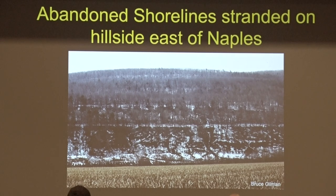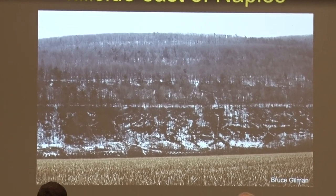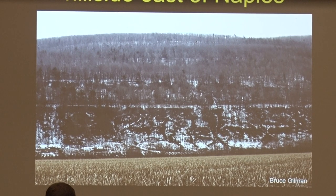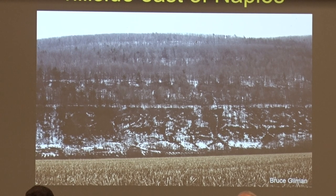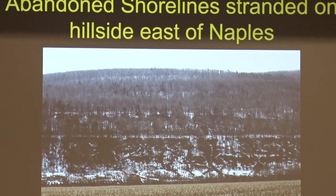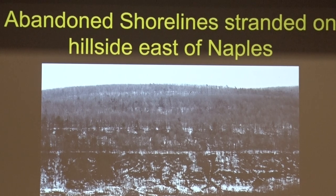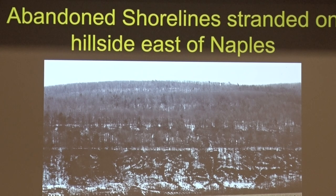I just happened to be down at the DEC maintenance building on Route 245, just as you come into Naples, right by Naples Creek where the Finger Lakes Trail runs. I looked back to the east on the hillside — it was late springtime, there was a little bit of snow. It had mostly melted off the sloping hillside, but where there were terraces, the snow had built up a little deeper and didn't get the same solar radiation to cause melting. For that moment in time, it revealed where those abandoned shorelines were on that hillside just east of Naples. It lasted about a day, and then it was gone — but if we're there at the right time and look, we'll notice these things.